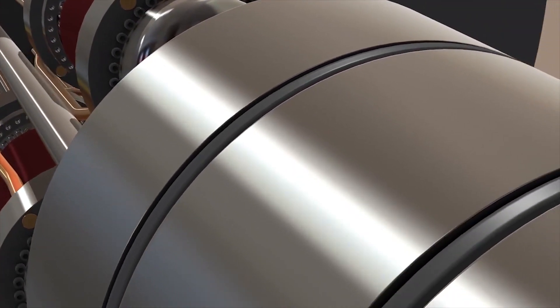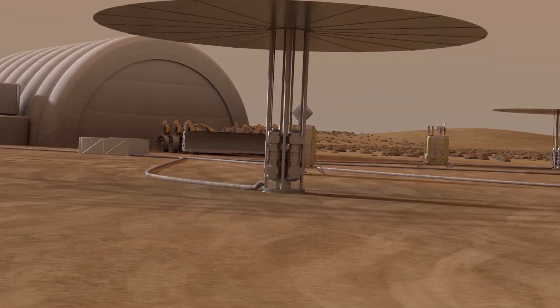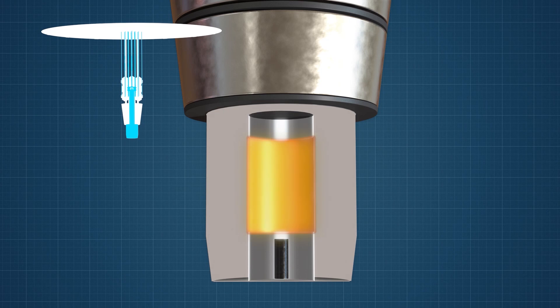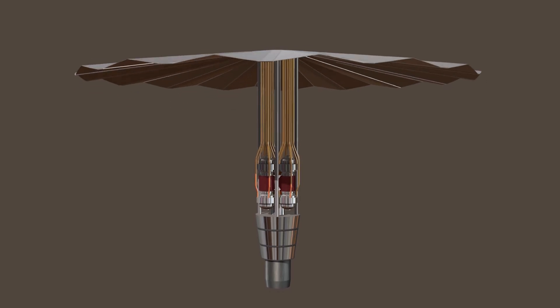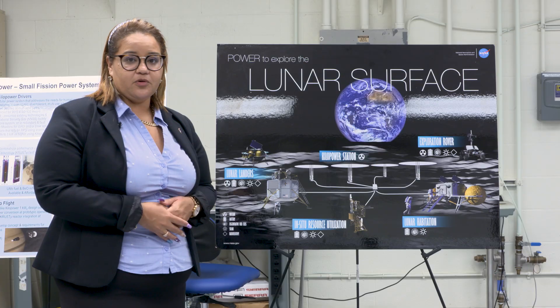Kilopower is a nuclear technology. This setup here will be the actual size of the reactor, and it's a fission system. The heat comes all the way up to these engines here. That gives you the electrical energy that you need to power instruments or habitats, to be able to go and explore the moon as part of the Artemis program.